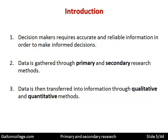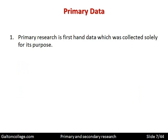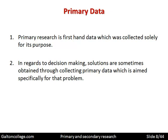Primary research is first-hand data which was collected solely for its purpose. It's first-hand and collected for the purpose for which it is intended. In regards to decision making, solutions are sometimes obtained through collecting primary data which is aimed specifically at that problem. Sometimes companies face a problem and they collect data to try to get an insight into the problem or the nature of the problem. That's primary research — it's focused entirely on the problem.